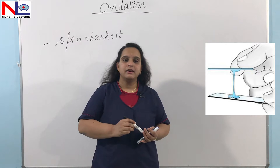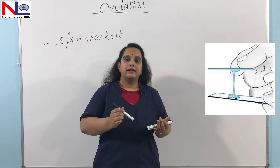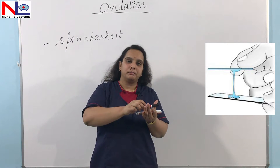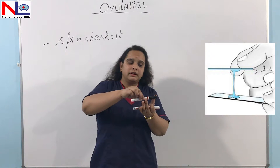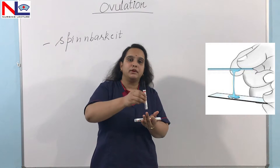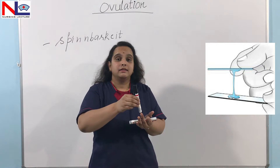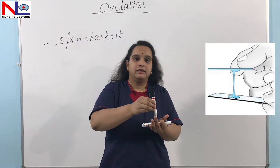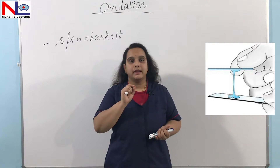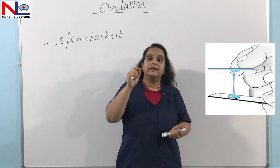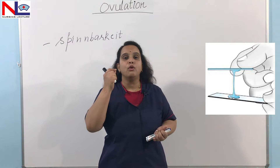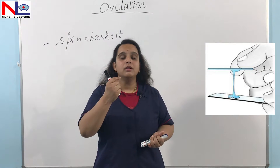Firstly, we'll collect the cervical secretion by means of a pipette and place it on one glass slide. We'll put another glass slide over the previous one, and then pull the glass slides away from each other. We'll see one string forming in between the two glass slides — that is the mucous fibre string, a thread-like structure — and it will extend up to 10 centimetres without any break.